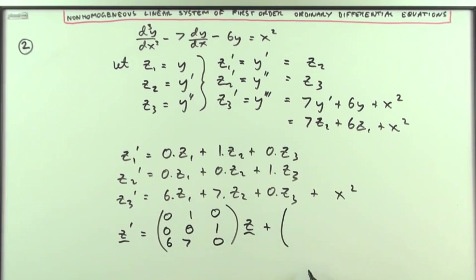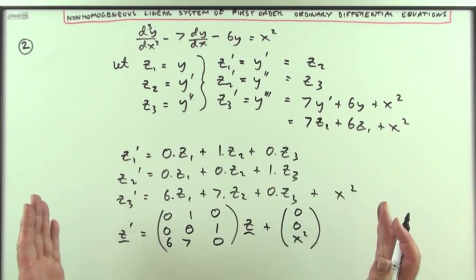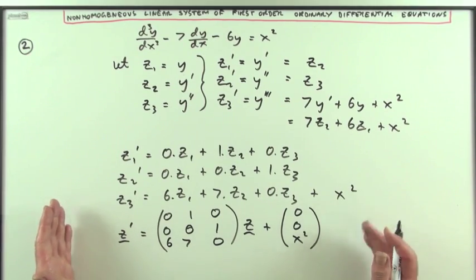and then separately, to balance it, it has to have, for the first one, there was nothing added, for the second one, there's nothing added as well, but for the last one, it's x squared.